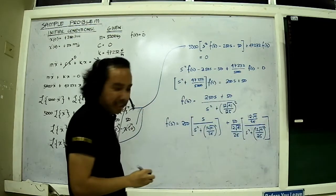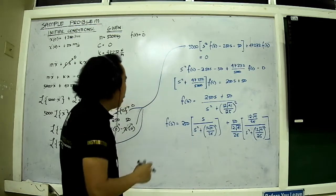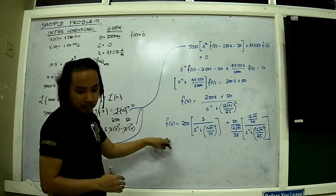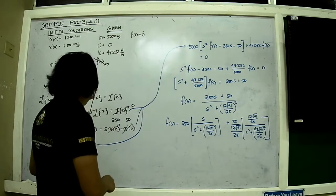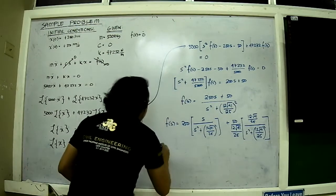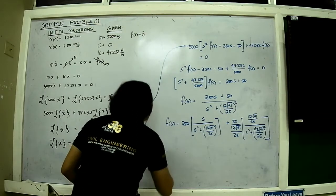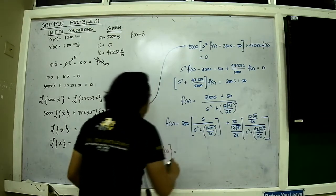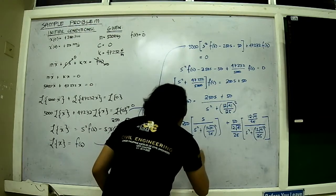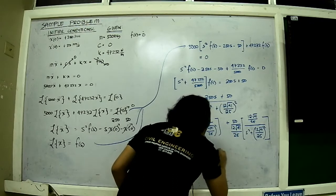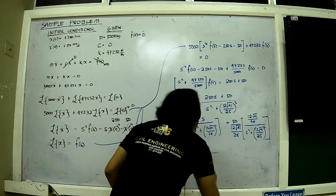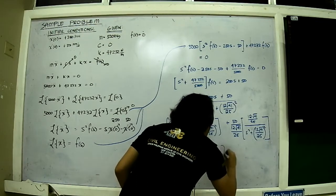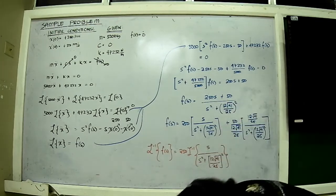Now with this kind of expression, we cannot just leave it here — this is an incomplete form of the solution. We need to go back to the original variable x. I apply the inverse Laplace transform, reversing the process from the Laplace domain back to the time domain. I can factor out 250, leaving s divided by s².